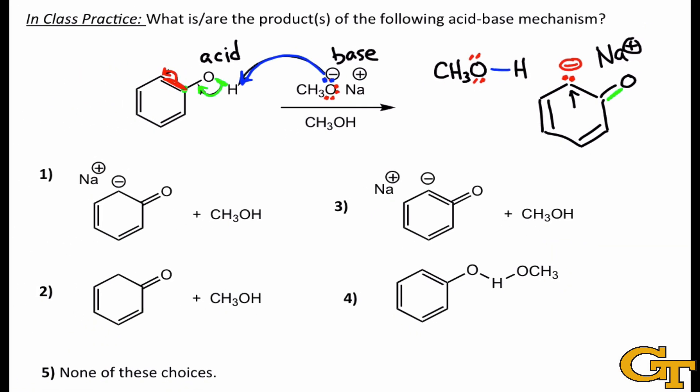The set of choices that matches these products is choice one. But notice that I didn't even look at the choices before I started drawing what the implied products were. This is a good practice when you're working through these types of problems, because it'll give you a sense of how curved arrows work, and helps you be a little more exact when you're studying how curved arrows work.